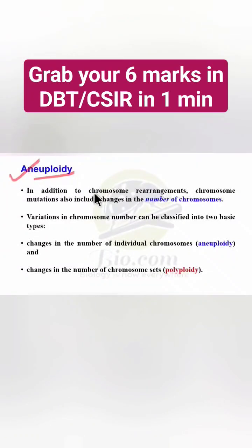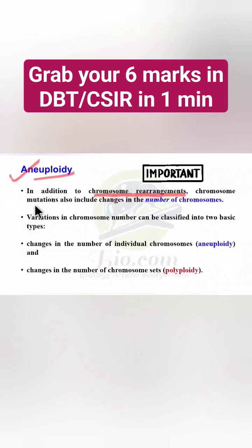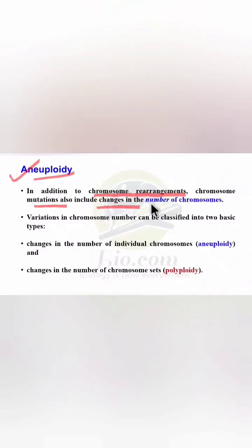Aneuploidy: In addition to chromosomal rearrangements, chromosomal mutations also include changes in the number of chromosomes. Apart from morphological changes in the chromosome, numerical changes can also occur, which is known as aneuploidy. Variation in chromosome number can occur in two different types.